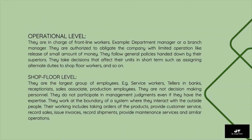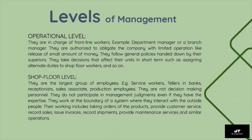At the operational level, managers are in charge of frontline workers — for example, department managers or branch managers. They are authorized to obligate the company with limited operations like release of small amounts of money, follow general policies from their superiors, and take decisions affecting their units in the short term, such as assigning alternate duties to shop floor workers. Shop floor level employees are the largest group — service workers, tellers in banks, receptionists, sales associates, production employees. They are not decision-making personnel and do not participate in management judgments. They work at the boundary of the system, interacting with outside people, taking orders, providing customer service, recording sales, issuing invoices, recording shipments, and providing maintenance services.